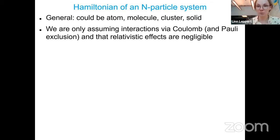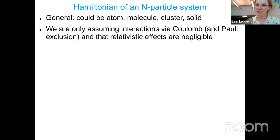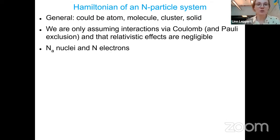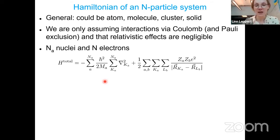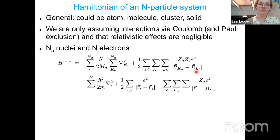We assume for now that relativistic effects are negligible. It's relatively straightforward to include this in practical DFT calculations, and when I show you band structures later, spin-orbit coupling will always be included. For deriving the equations, we don't need to deal with spinors for now. We have a certain number of nuclei and electrons, and we can write down the Hamiltonian, which consists of the kinetic energy of the nuclei, the Coulomb interaction between those nuclei, the kinetic energy of the electrons, their Coulomb interaction with each other, and their Coulomb interaction with the nuclei.